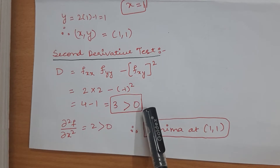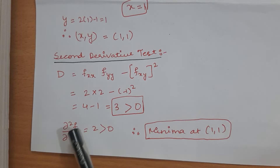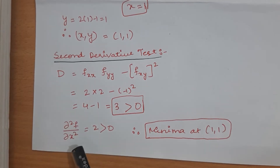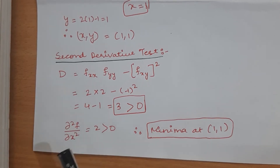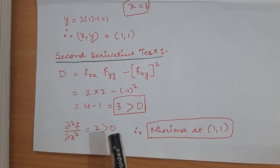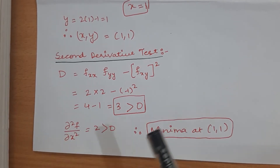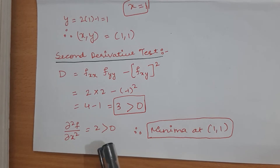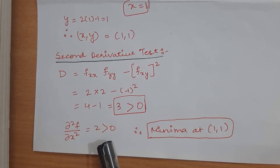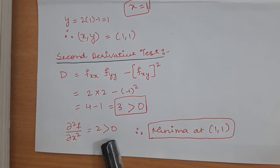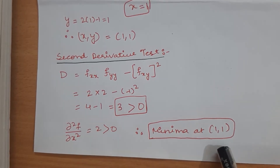Since D > 0, we check whether ∂²f/∂x² is positive or negative. Since ∂²f/∂x² is also greater than 0, we have a minimum at the point (1, 1).